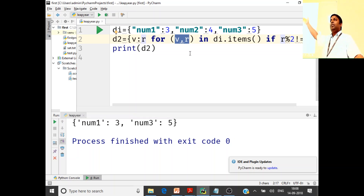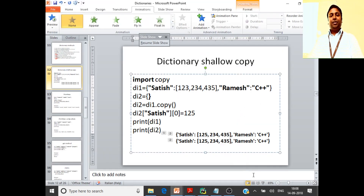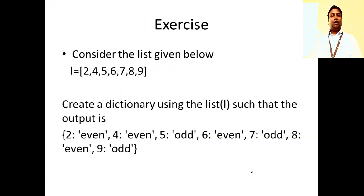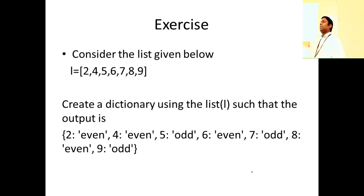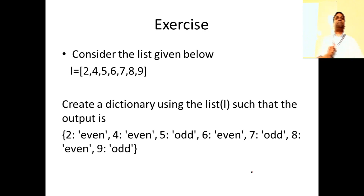We've done similar things in list comprehension — 2D lists and so on — so this should be easy. The key thing is how you get the key-value pair and move it to another dictionary, because a dictionary contains key and value. I can't just put r there — r is one value; a dictionary must contain key and a value. Here's another exercise: given list l = [2, 4, 5, 6, 7, 8, 9], create a dictionary where each number maps to 'even' or 'odd' using dictionary comprehension.